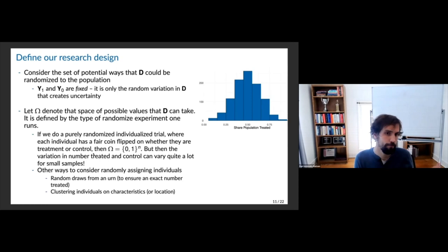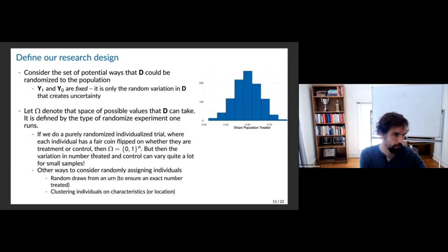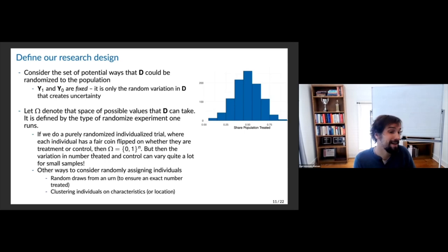Think of omega as a probability space — the space of possible values the D-vector can take. This omega space, and the probability distribution over it, is defined by the type of randomized experiment one runs. In the coin flip example, if there are n of us, the full space is just 2-to-the-n — all pairwise combinations of zero and one for all n individuals. The trick with that type of randomization is there can be a lot of variation in how many people end up treated.